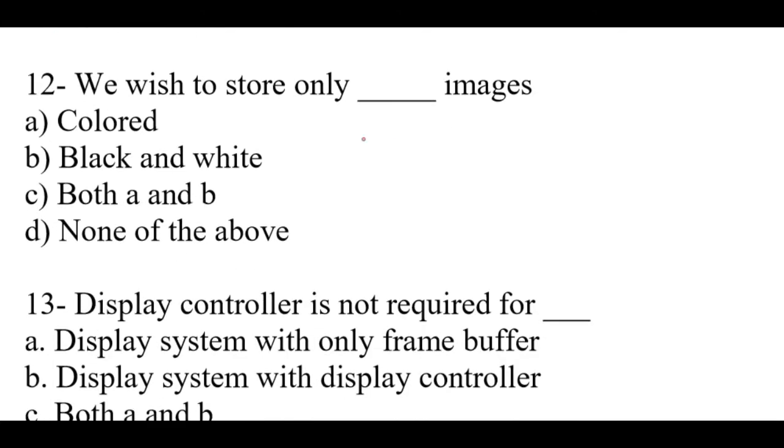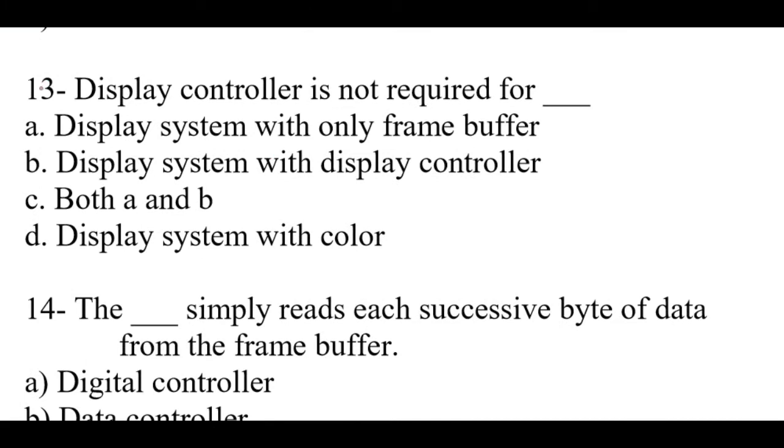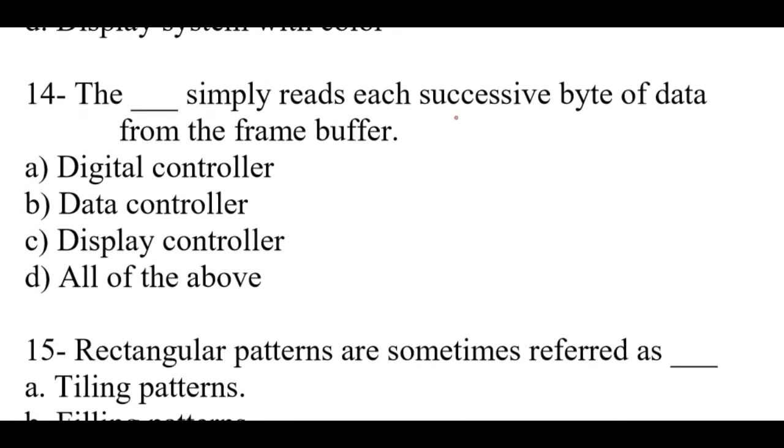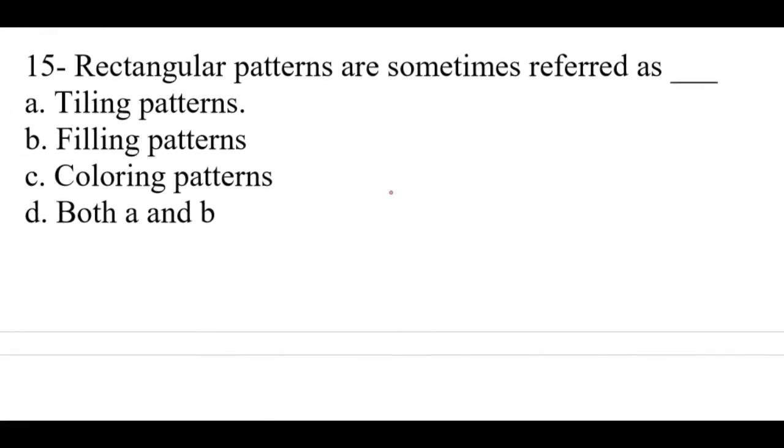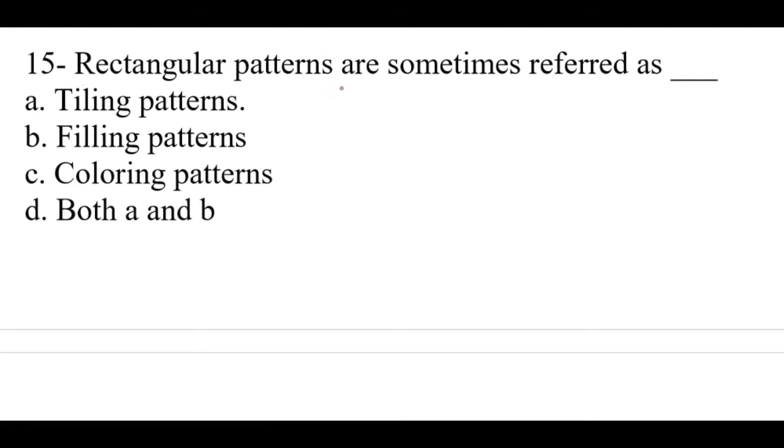Question number 11: Inside the frame buffer the image is stored as a pattern of dash digital numbers. Right option is B, binary. Question number 13: Display controller is not required for dash. Right option is A, display system with only frame buffer. Question number 14: The dash simply reads each successive byte of data from the frame buffer. Right option is C, display controller. Question number 15: Rectangular patterns are sometimes referred to as dash. Right option is A, tiling patterns.